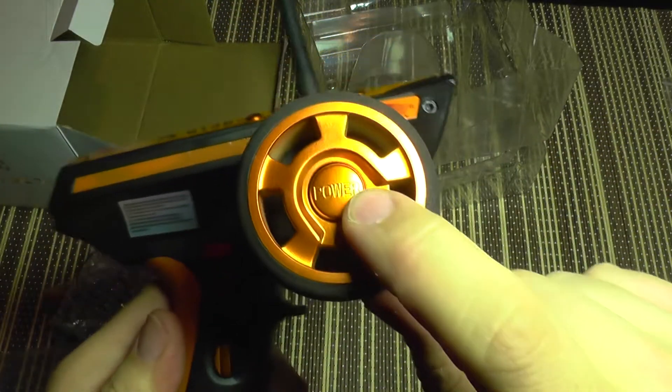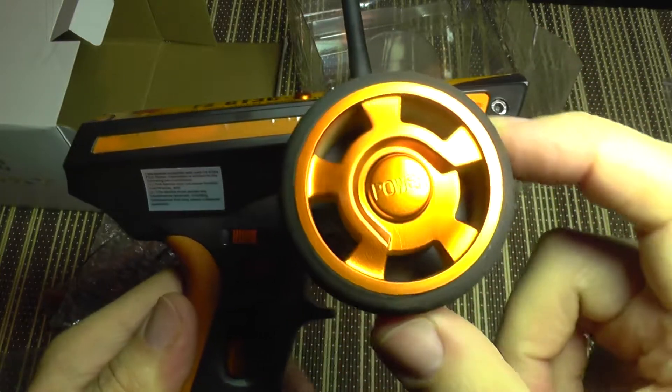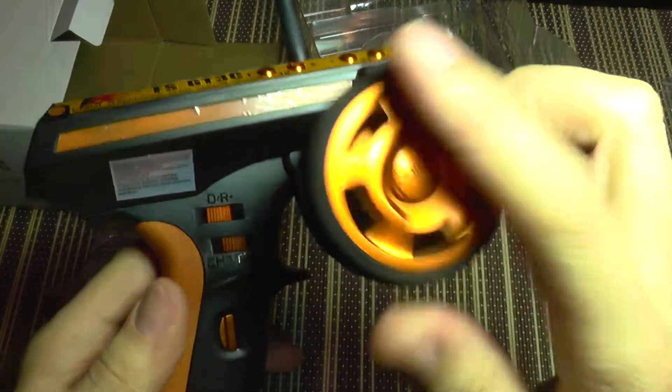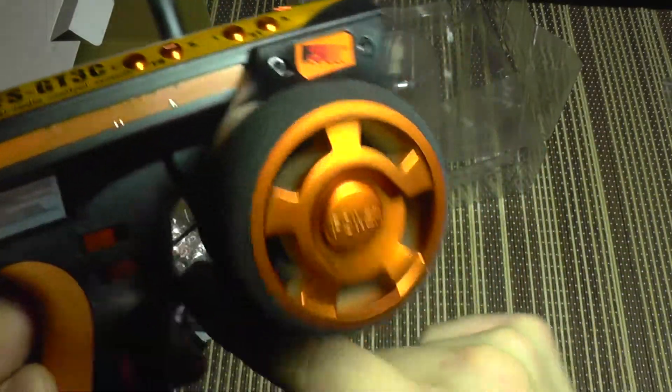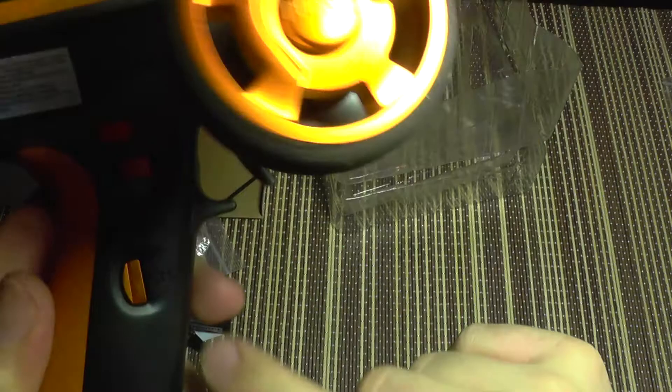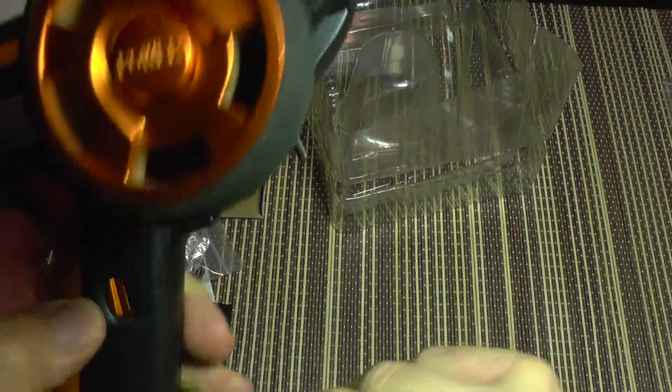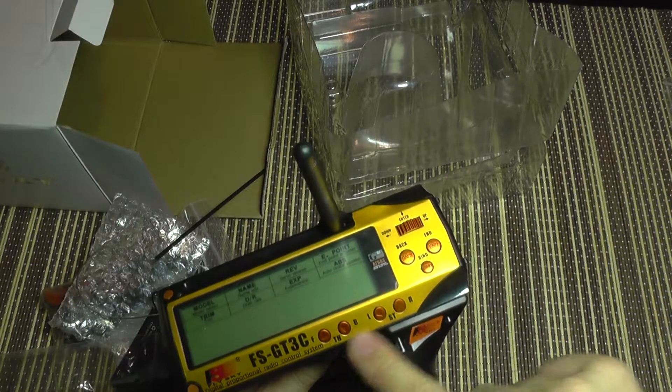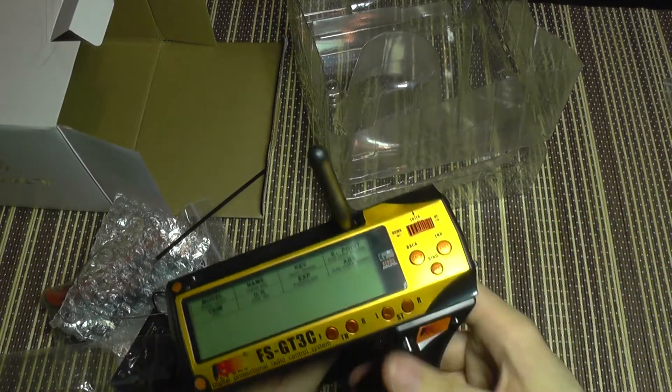The power switch is oddly placed here and it will turn around with the steering wheel. It has dual rates here, channel 3 trim button here, channel 3 button it's a push button.